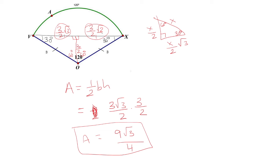Next, let's find the area of the sector. So the area of the sector is of the form 1 half r squared theta. And theta has to be in radians. Now the radius here is 3 because O is the center of the circle.